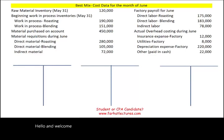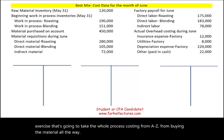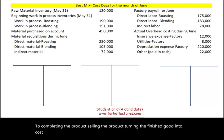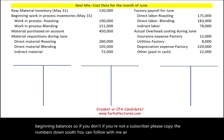Welcome to the session where we look at a process costing exercise that covers the whole process from A to Z — from buying the material all the way to completing the product, selling it, and turning finished goods into cost of goods sold. I'm going to go over the entries and the beginning balances. If you're not a subscriber, please copy the numbers down so you can follow along.